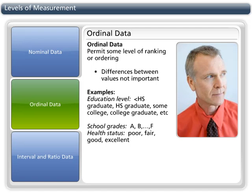Ordinal data is collected in a way that has an inherent rank or order, like level of education or health status. The differences between the levels is not important, however. For example, education level is ordinal data, since there is a ranked order to grades completed.